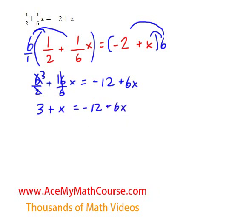Great. Now what can I do? Now I can add 12 to both sides of the equation. These would cancel out. 3 plus 12 is 15, we're adding an x, and that's equal to 6x.